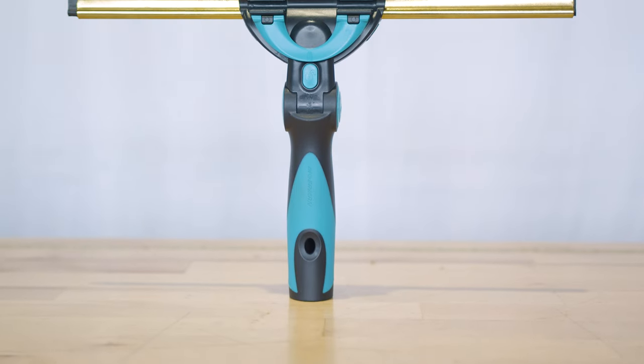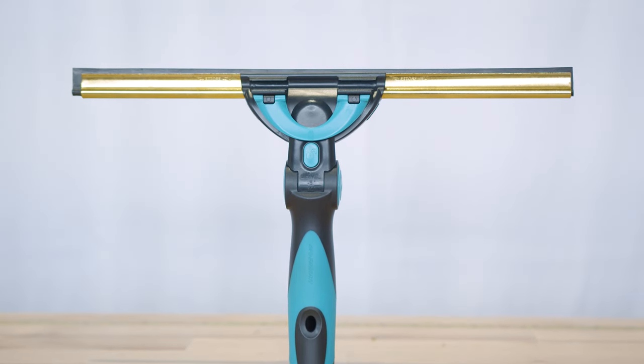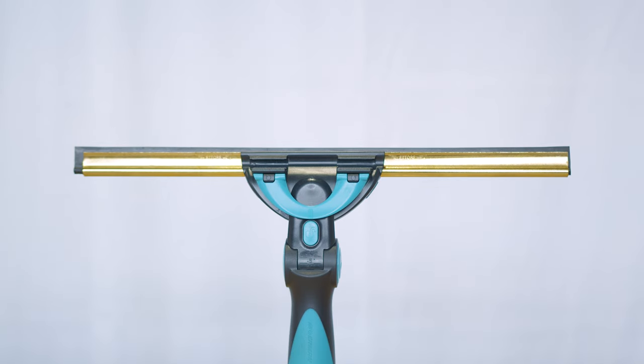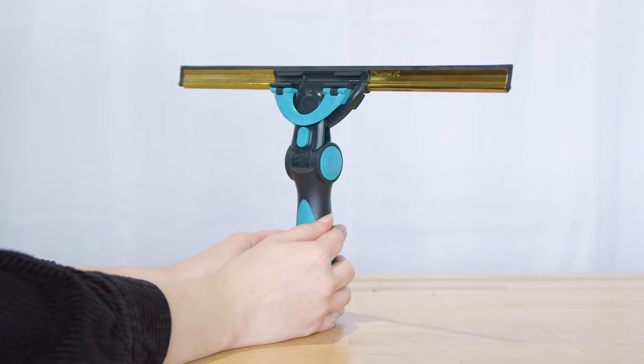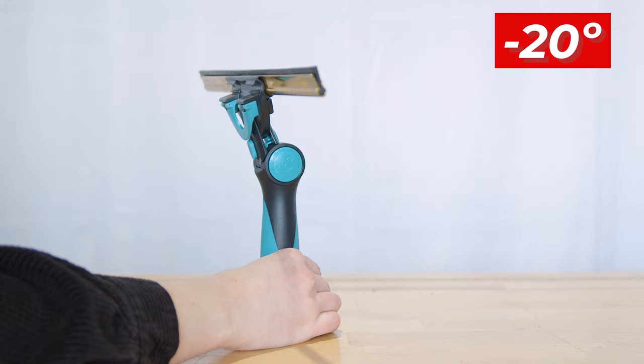Starting with the Ultimate Squeegee Combo, this set is celebrated for its adaptability and efficiency. It includes the Moorman Accelerator 2.0 handle, known for its adjustable angles, ranging from negative 20, negative 5,